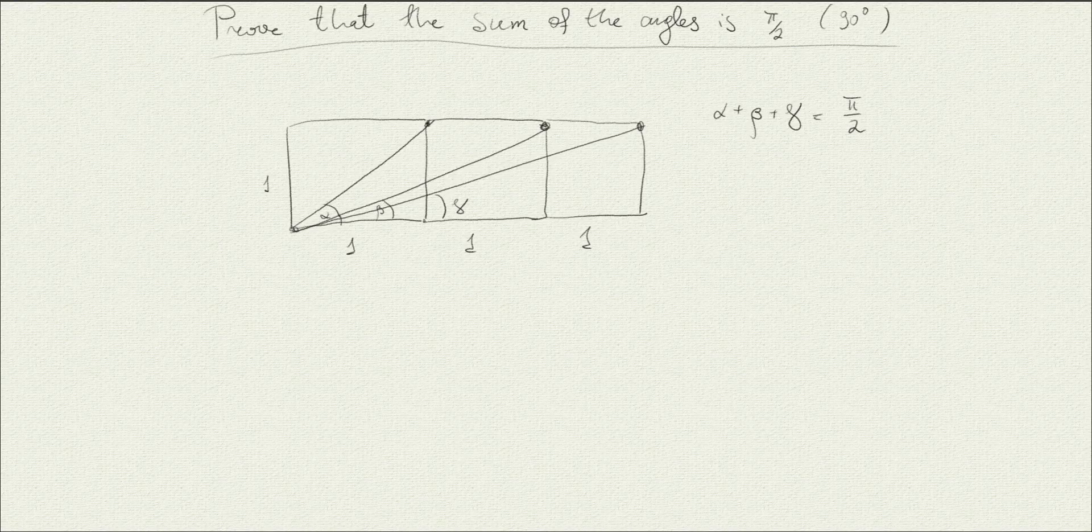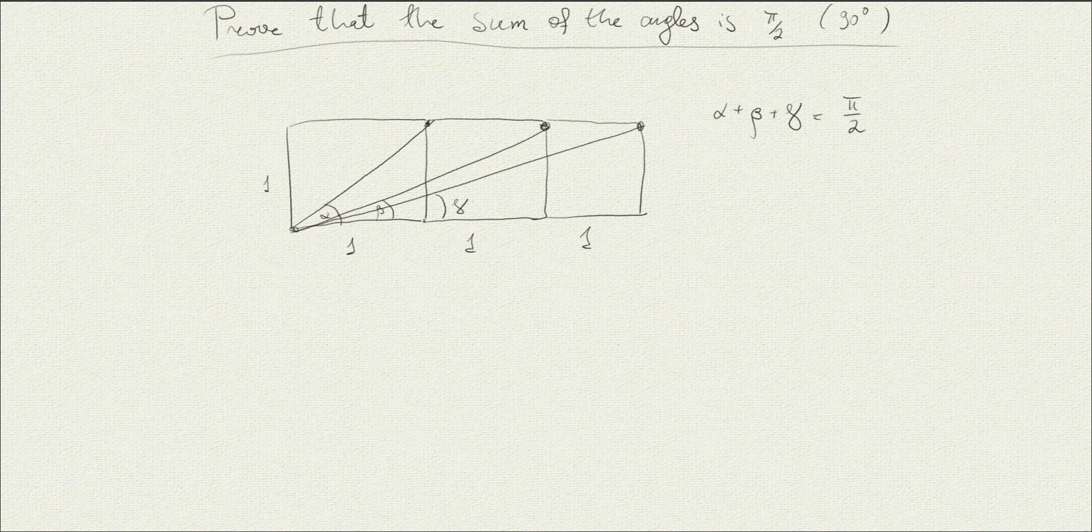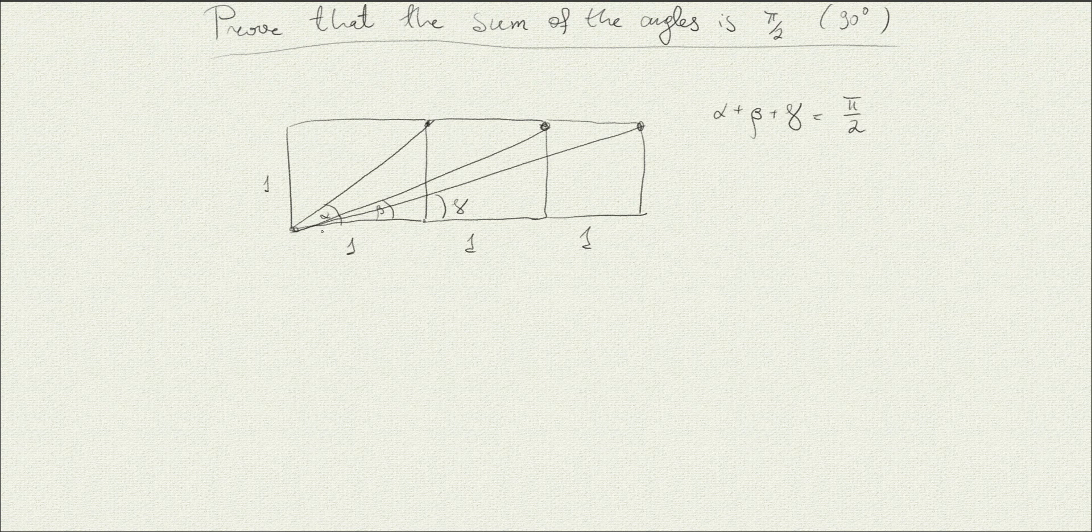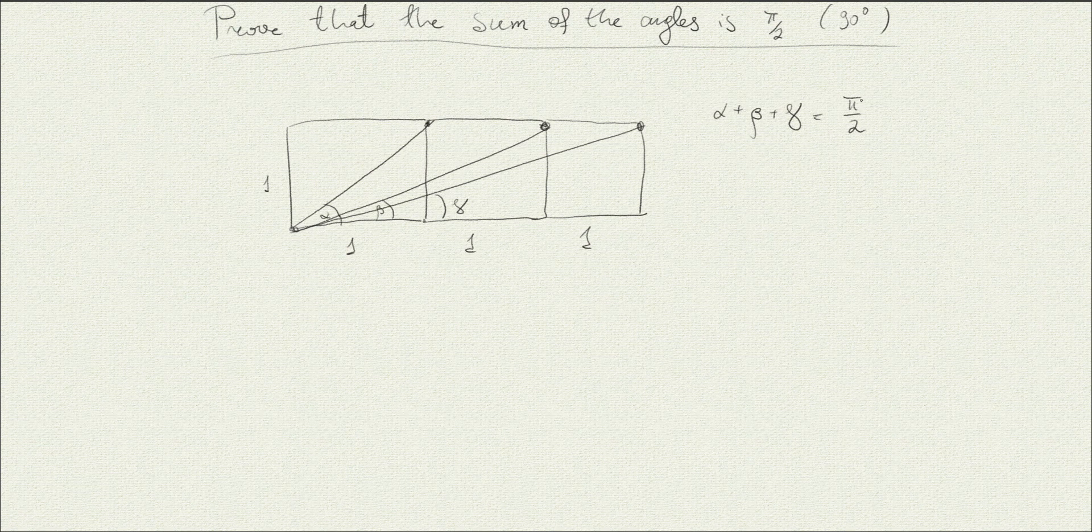In this video, I would like to show you a very nice and elegant solution to a problem from geometry. So as you can see here, we're given three adjacent squares with side equal to some unit lengths, and we're asked to prove that the sum of the angles alpha plus beta plus gamma is equal to pi half radians or 90 degrees.